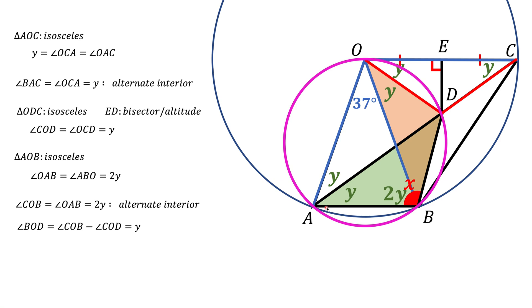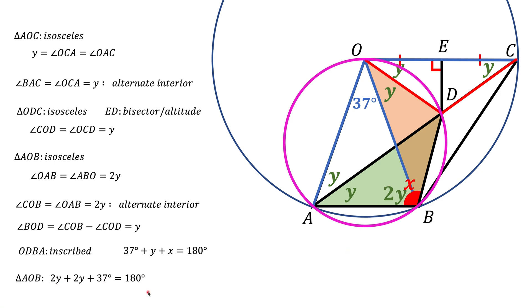A quadrilateral is inscribed if and only if the sum of its opposite angles is 180 degrees. This means angle O — which is 37 plus Y — and angle X together must equal 180 degrees. To find Y, we use triangle AOB, where the sum of all angles is 180 degrees: 2Y plus 37 plus 2Y equals 180, giving us Y equals 35.75 degrees. Substituting back, we get the final answer.